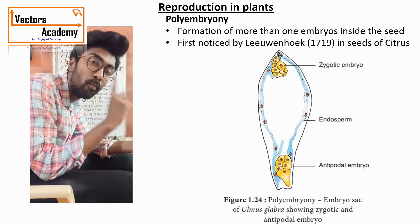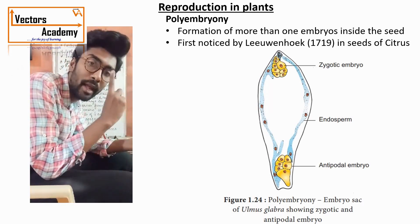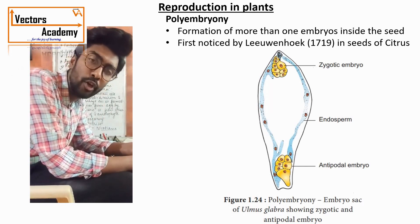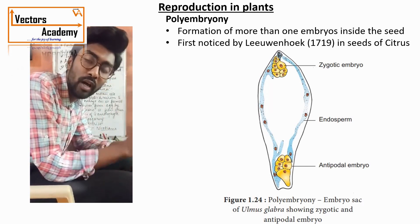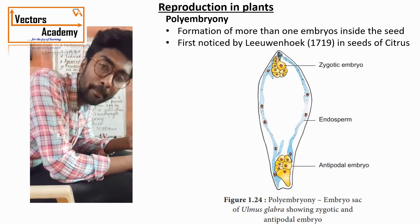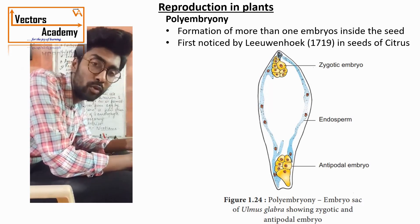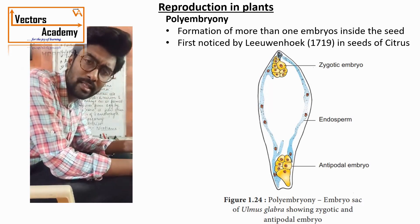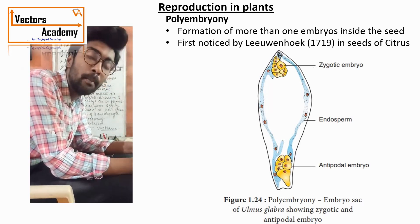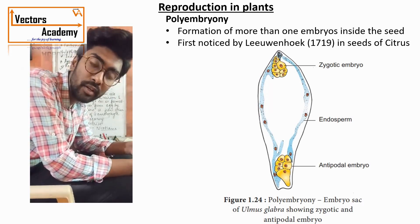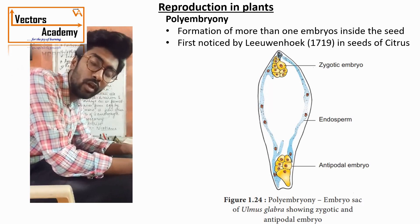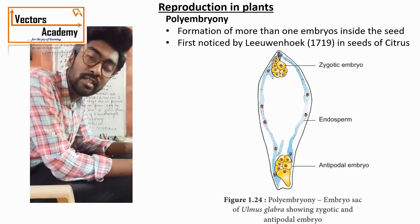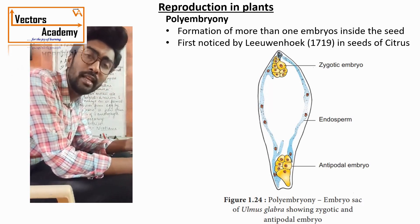Polyembryony occurs because there is more than one egg cell found in the embryo sac or ovule, and all these egg cells get fertilized, giving rise to more than one embryo. Polyembryony is mainly seen in citrus fruits like lemon, mango, Mozambi (mosambi), groundnut, onion, etc.